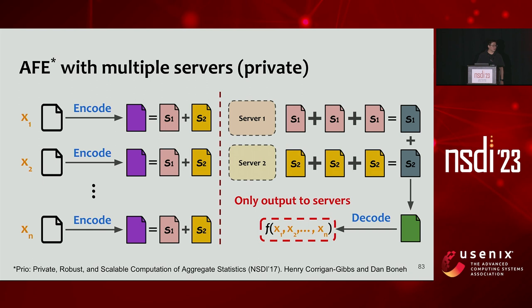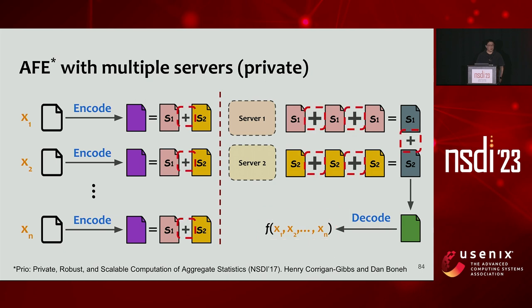Importantly, this is the only output to the servers — they learn nothing beyond these outputs. Another key property is that the AFE scheme uses only very cheap computations: a cheap encode and decode function, with all other operations being additions. This makes it a perfect fit for building a very efficient auction protocol.